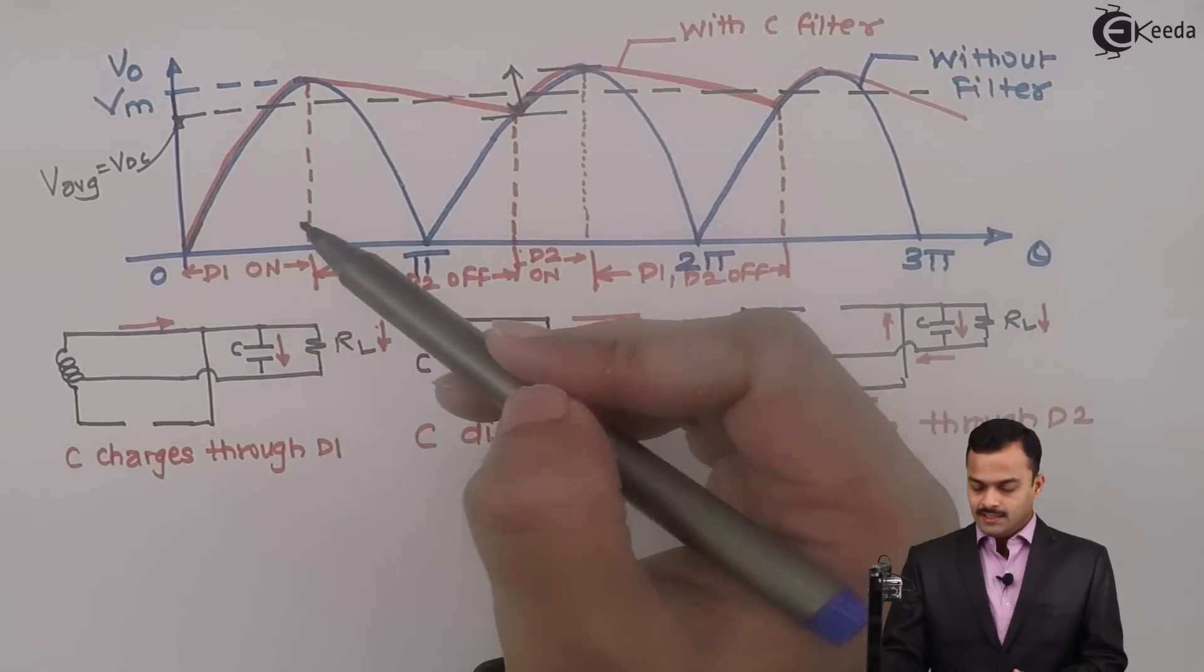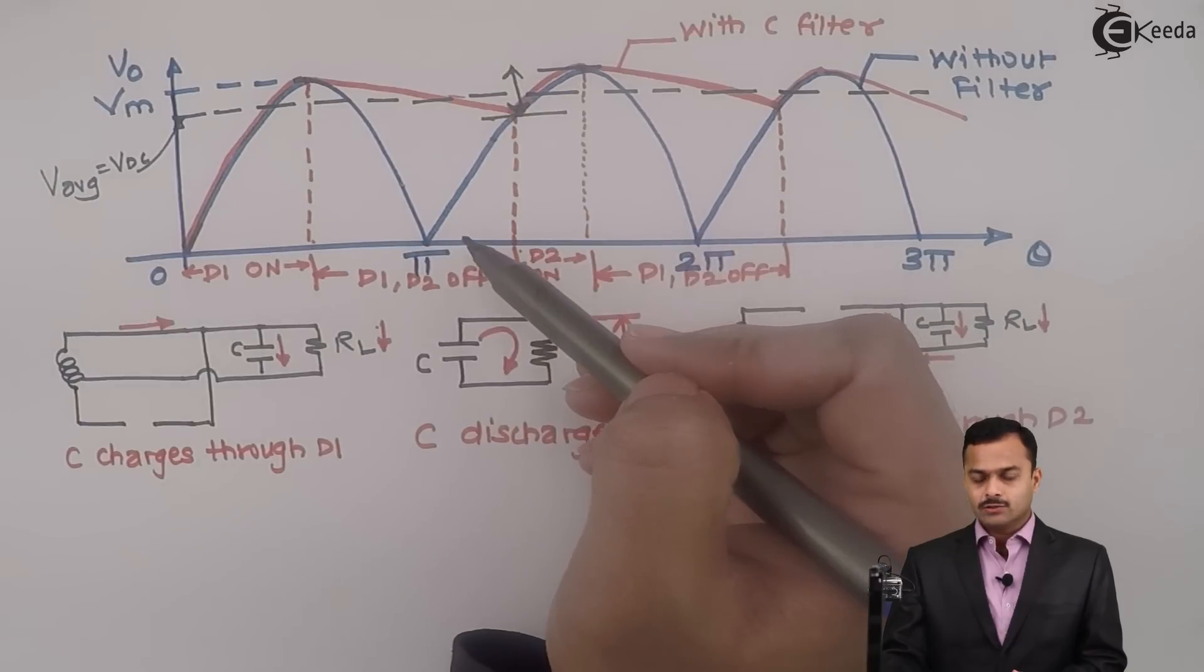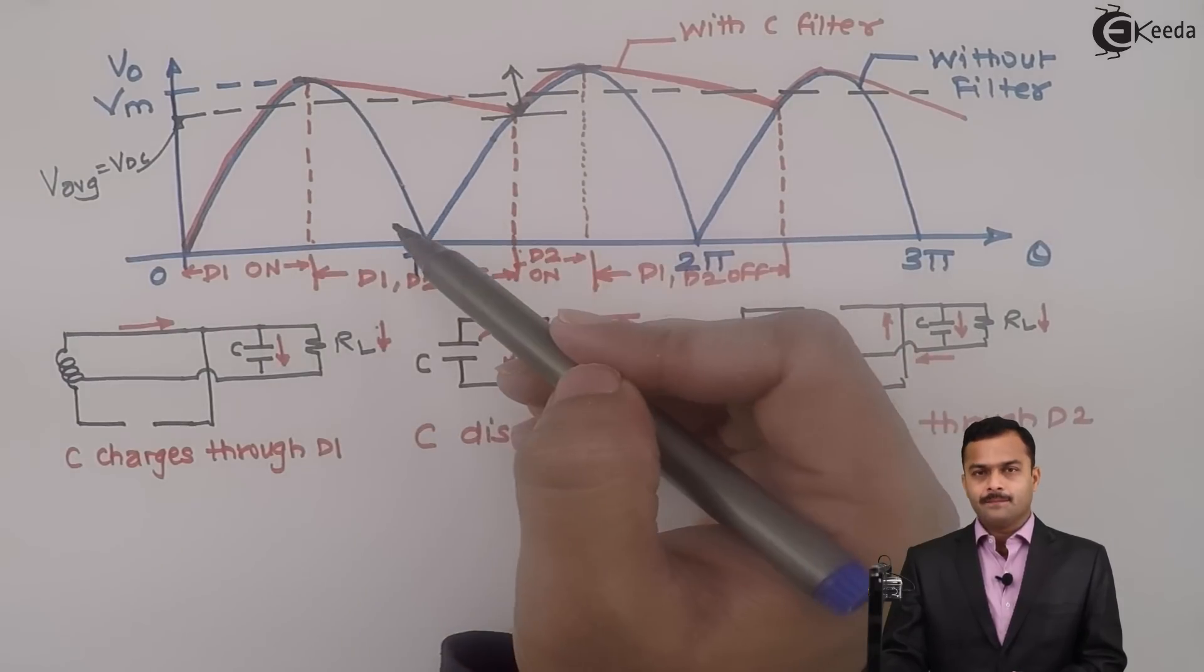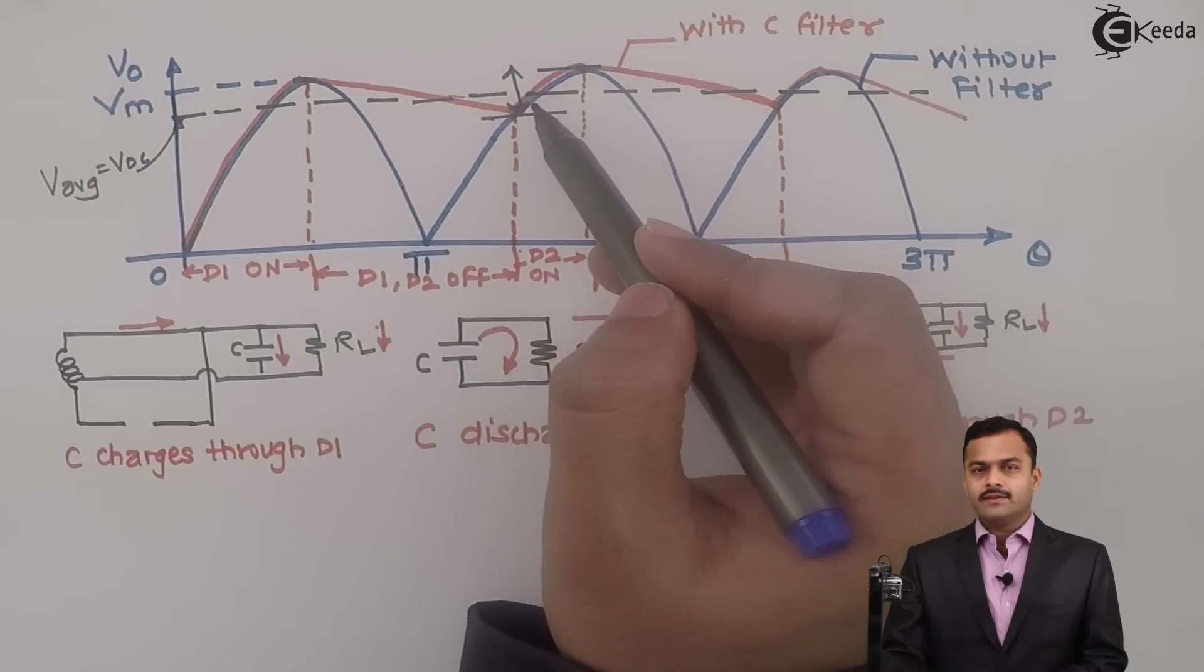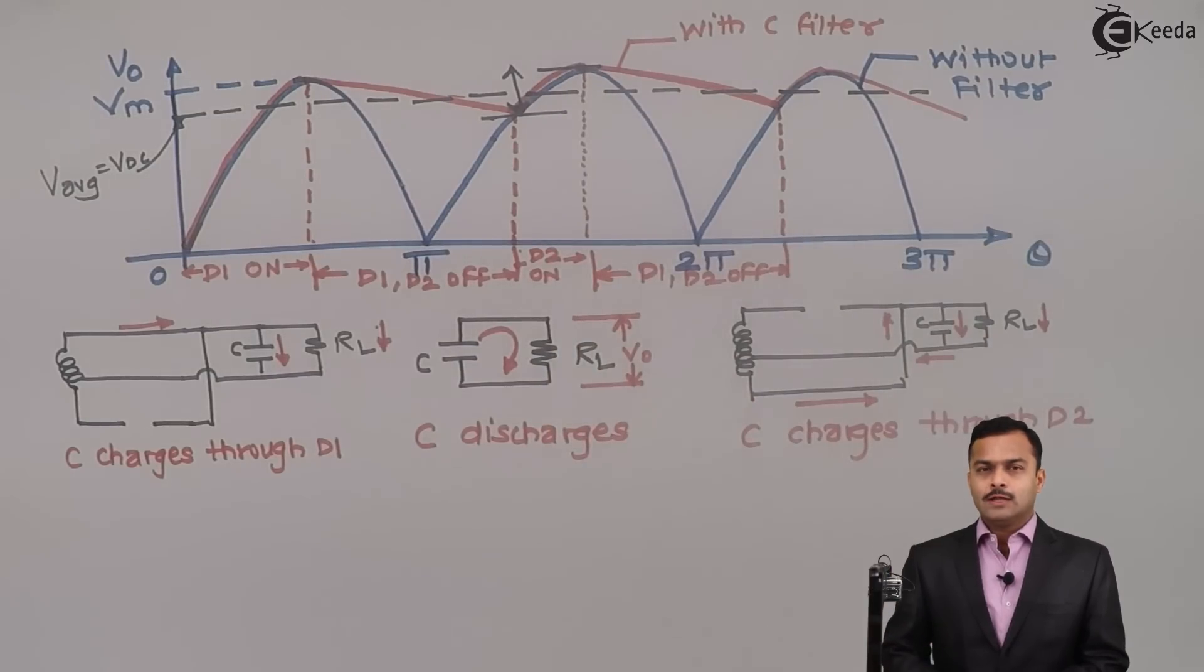That ripple value is very, very less compared to the ripple value without filter. Without filter, the ripple value is very high - you can see 0 and Vm. But here it is very less. If you keep on increasing the value of C, this waveform will become almost like perfect DC, which we call ripple free. This is the concept of a capacitor filter.